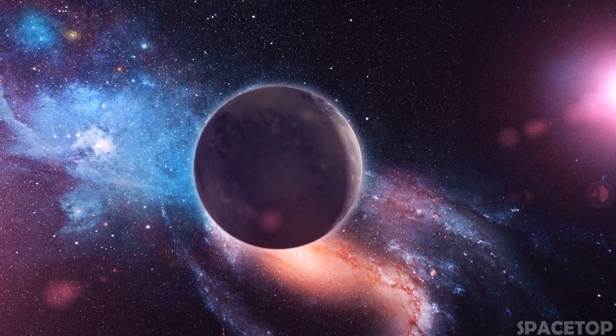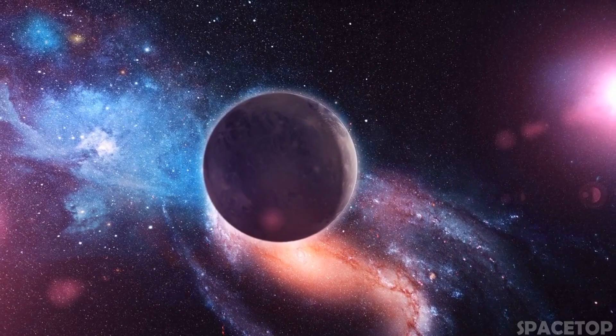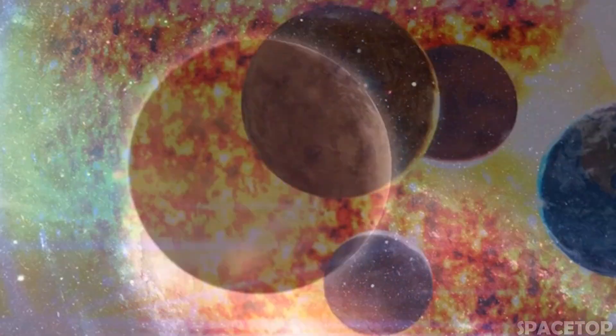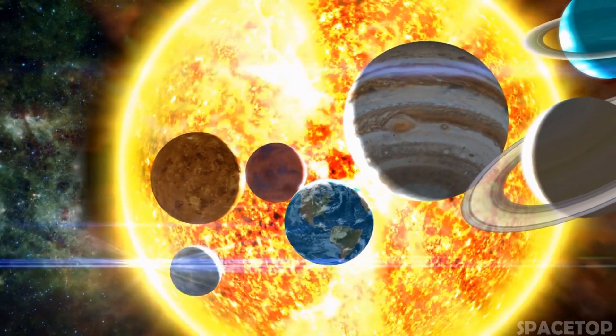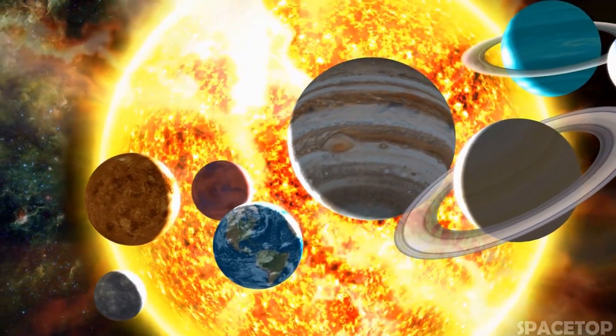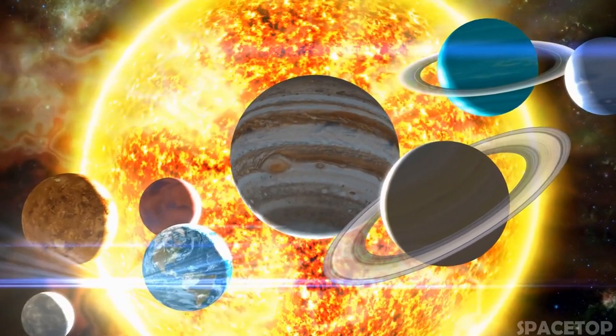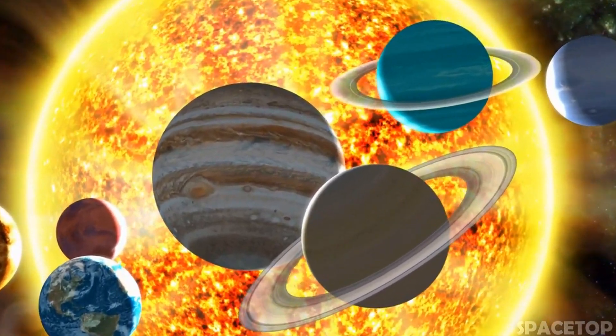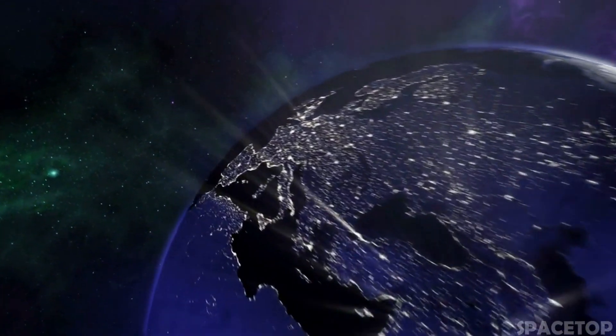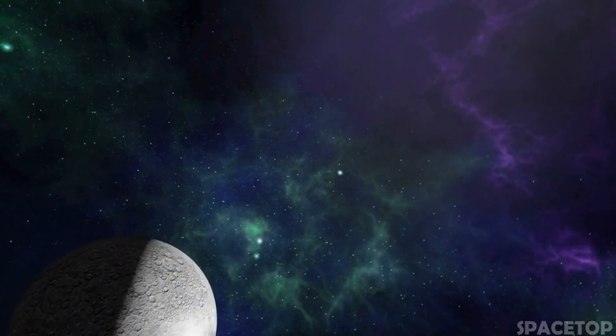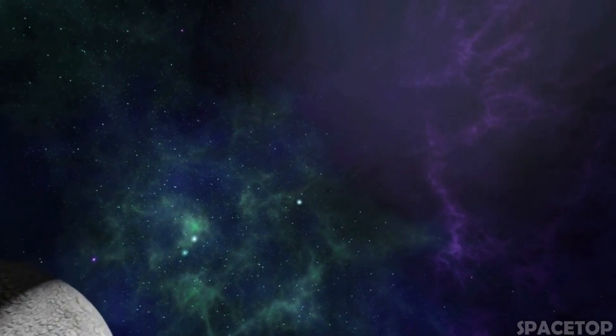It is believed that the age of this system is about 160 million years, which is an extremely small age compared to our solar system. For example, our solar system originated more than 4.5 billion years ago, and because of the young age of the exoplanet, it is still changing and losing the heat of its formation, which gives it a dim purple glow.